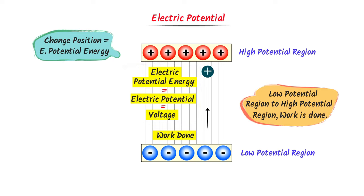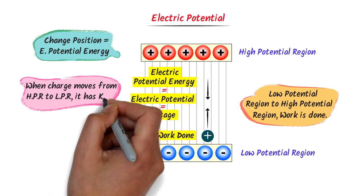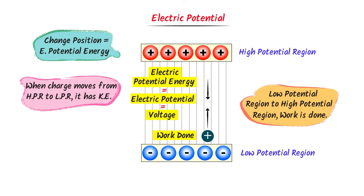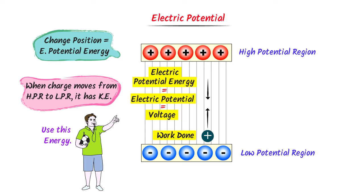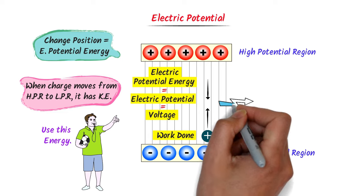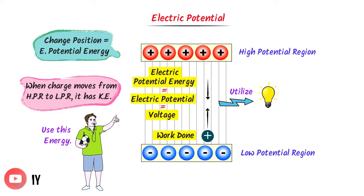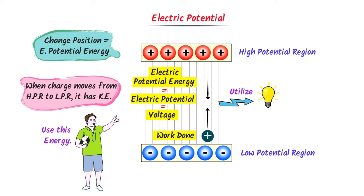Remember that electric potential energy, electric potential, and voltage are the same things. In addition, we also know that this test charge will move from high potential region to low potential region. According to the third fact, when a test charge falls from high potential region to low potential region due to electric potential energy, we can utilize its energy. For example, when this test charge moves from high potential region to low potential region, we utilize its kinetic energy to light a bulb.